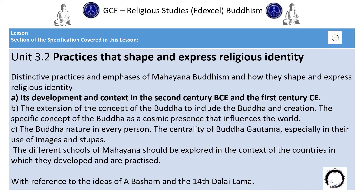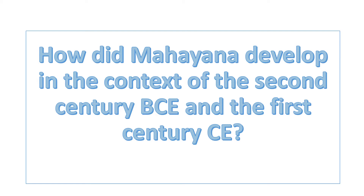Notice at the bottom the two key scholars are Arthur — A.L. Basham — and later on we'll get to the Dalai Lama. Basham being an outsider scholar, a religious studies scholar from London, and the Dalai Lama obviously the leader of the Tibetan Buddhists. The key question we're asking today is: how did Mahayana develop in the context of the second century BCE and the first century CE?